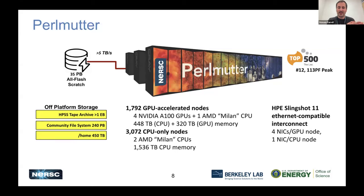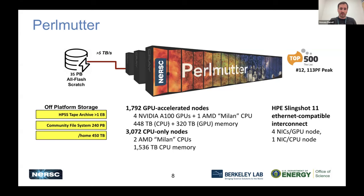In terms of deployment, we have one system today that is really great for machine learning and deep learning: Perlmutter. It came out as number five on the Top 500 list; today it's number 12. It has a lot of NVIDIA A100 Ampere GPUs — about 7,000 of them across around 1,800 nodes, each with four A100 GPUs. We also have a fairly sizable CPU-only partition of about 3,000 nodes. Perlmutter has the HPE Slingshot network, a 35-petabyte all-flash Lustre system as scratch space, and a range of off-platform storage options including home filesystem, community filesystem, and tape archive.